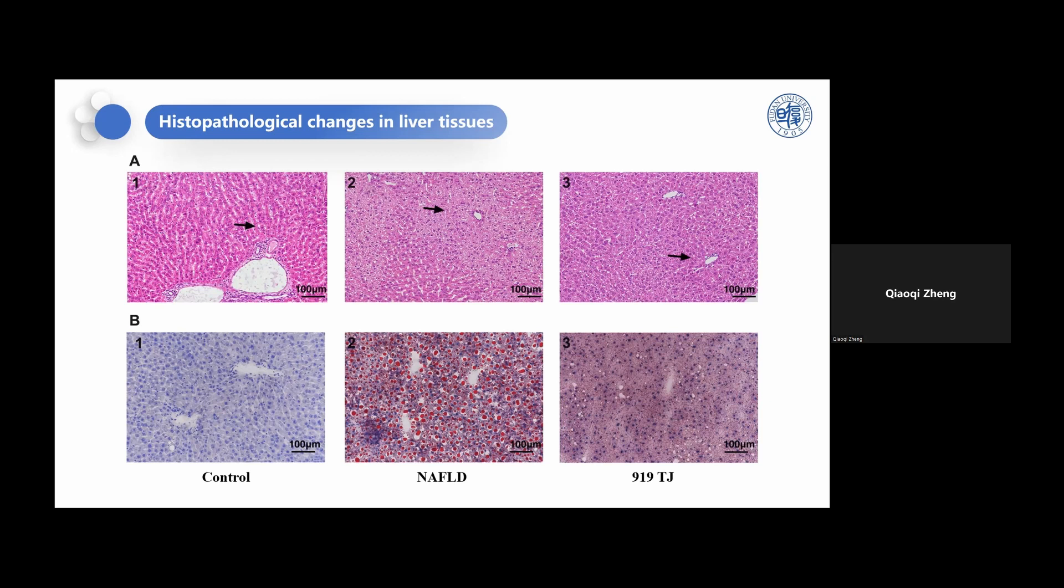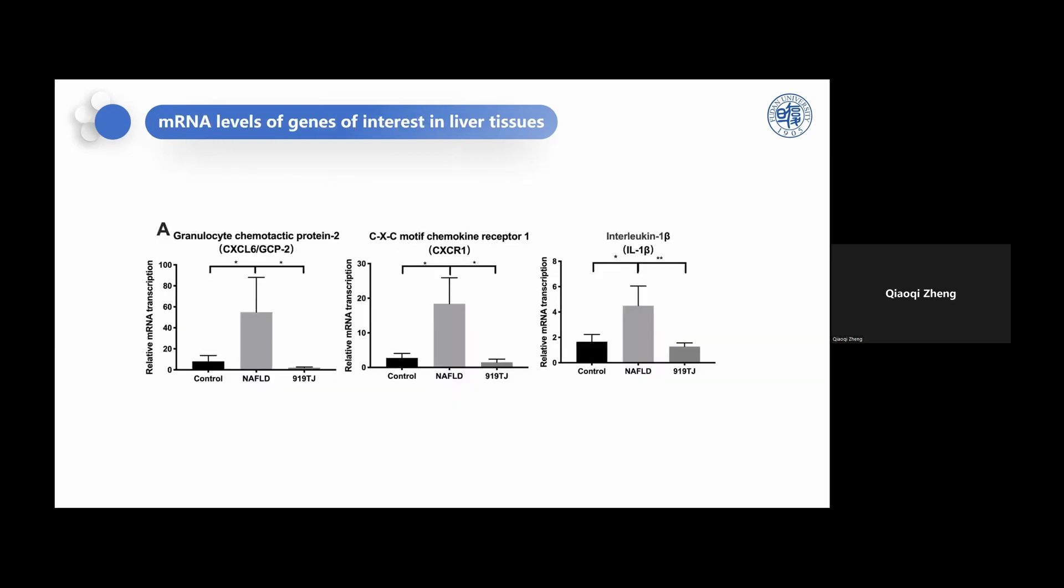Then the figure shows the Oil Red O-stained sections of the liver. The lipid droplets in the tissue were stained red. The rats in the control group have a normal liver tissue structure, a clear boundary in the portal vein region, and a complete hepatic lobular structure. Hepatocyte steatosis was significant in the model group with many round-like lipid droplets stained red and unclear hepatic cords. The number of lipid droplets was lower in the liver cells in the TJ group than in the model group, and their size and shape were more similar to those in control animals.